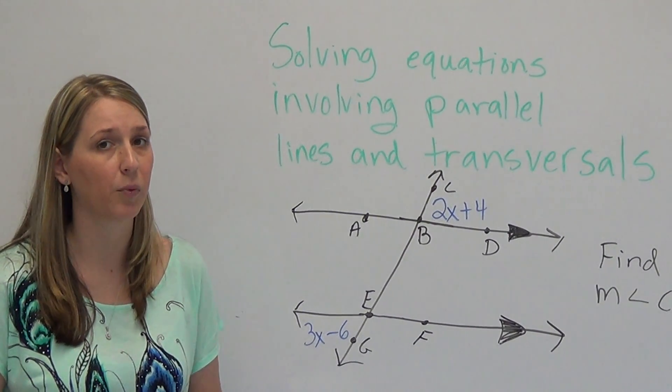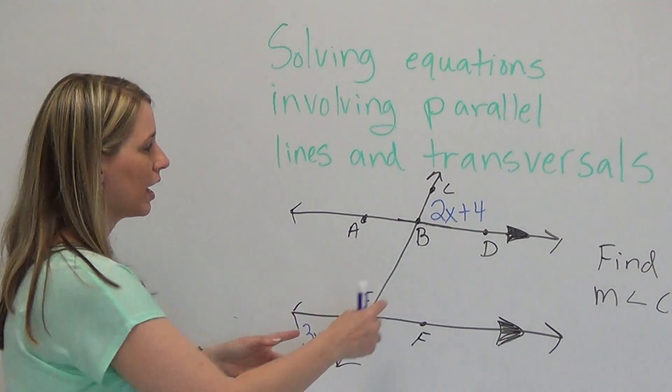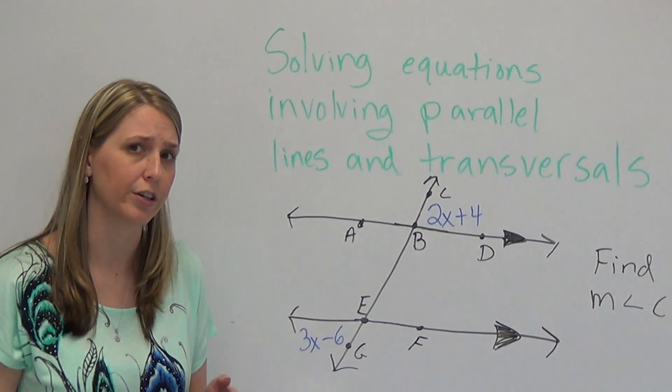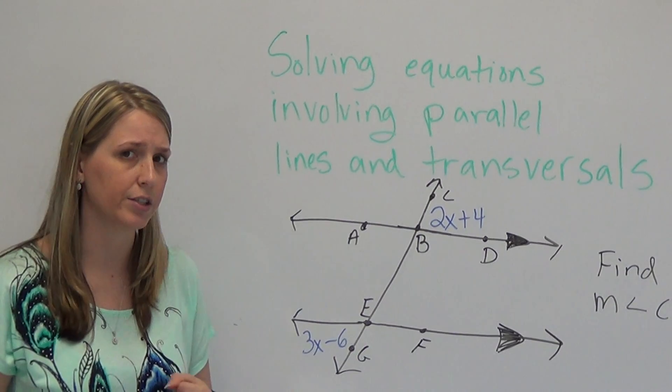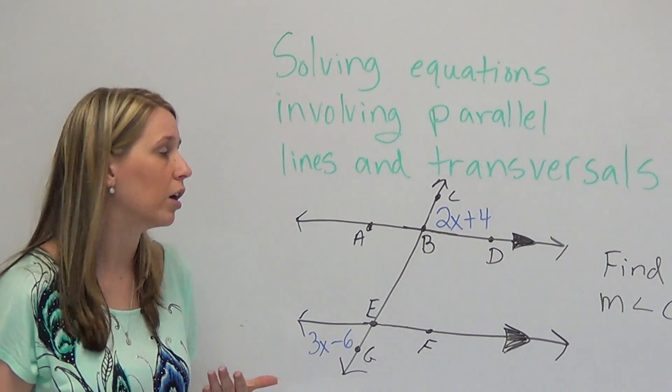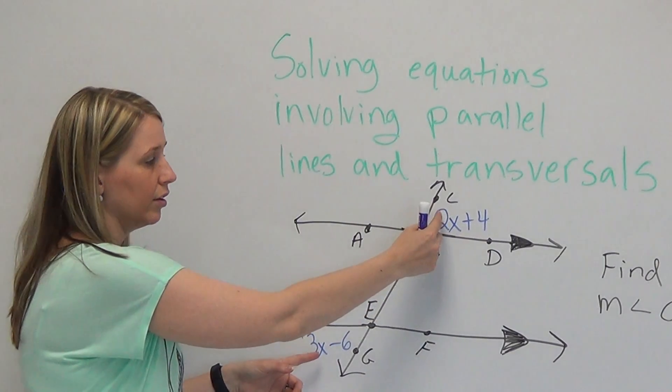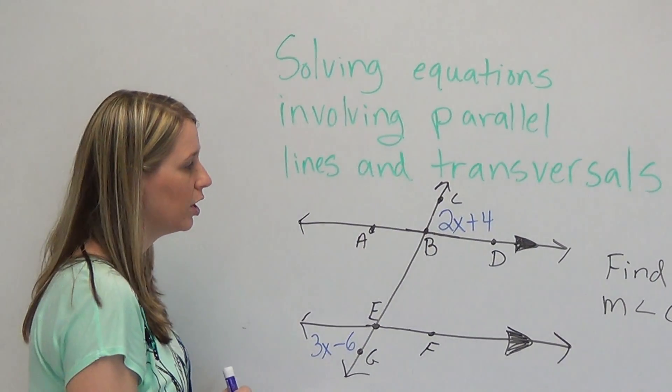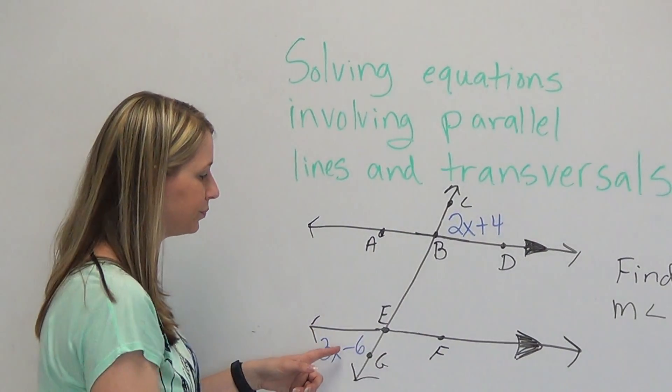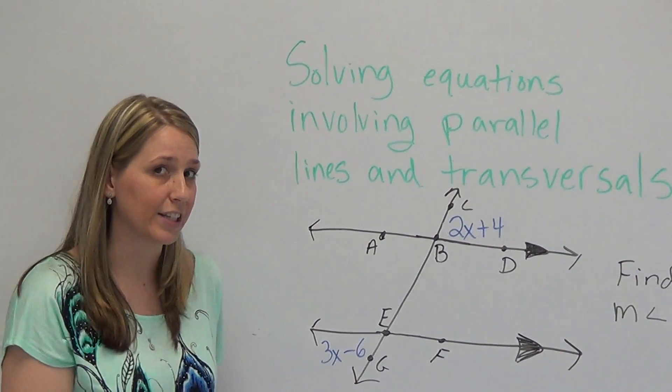So first you have to think about what type of angles these are. If you look at this angle pair, we have 5 different types: alternate interior, alternate exterior, same side interior, same side exterior, and corresponding. So we have to decide what type of those are. They're exterior, they're both exterior, and they alternate around the transversal, the line in the middle, so they are alternate exterior angles.